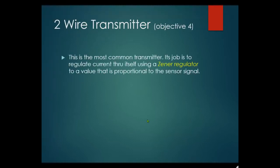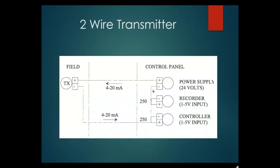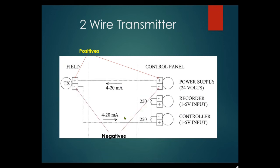Objective four — two-wire transmitter: this is the most common transmitter. Its job is to regulate current through itself using a zener regulator to a value proportional to the sensor signal. Current is not produced but rather regulated. The power supply is 24 volts with recorders having 250 ohm resistors across them for a 1 to 5 volt drop. Wiring: positive from the field transmitter to positive, negative to positive, positive to negative — and negative to negative at the end of the loop.